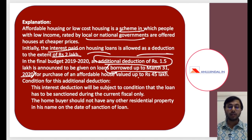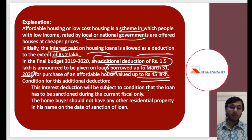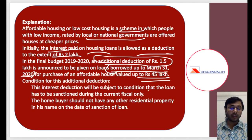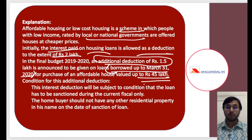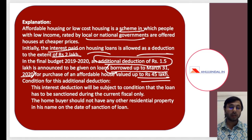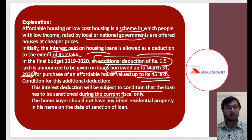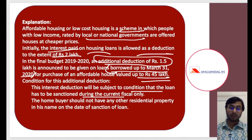The affordable house should be valued up to rupees 45 lakh. So if you buy an affordable house up to rupees 45 lakh, on the interest you pay on the loan taken for that house, you previously had a deduction of 2 lakh, and now an additional deduction of 1.5 lakh. The interest deduction is subject to the condition that the loan must be sanctioned during the current fiscal only, that is up to 31st March 2020. Also, the home buyer should not have a previous residential property in his name on the date of loan sanction.